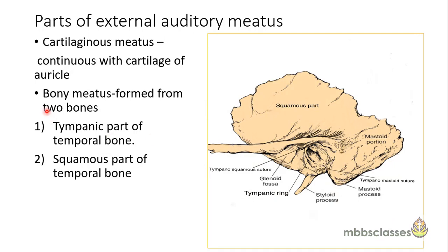The outer cartilaginous part is continuous with the cartilage of the auricle. The inner bony part is formed by two bones that are part of the temporal bone. The first is the tympanic part of the temporal bone, which forms the tympanic ring — the bony meatus. The second bone contributing to the meatus is the squamous part of the temporal bone.